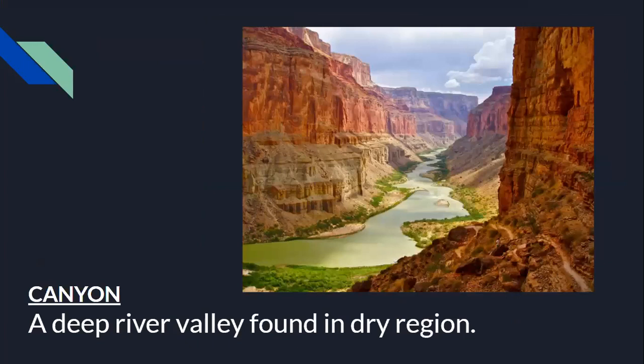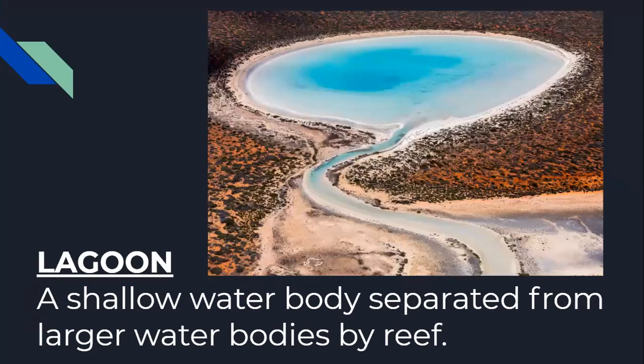Kenya — a deep river valley found in a dry region. It is basically found in dry regions where water passes through. Lagoon — a shallow water body separated from larger water bodies by a reef.